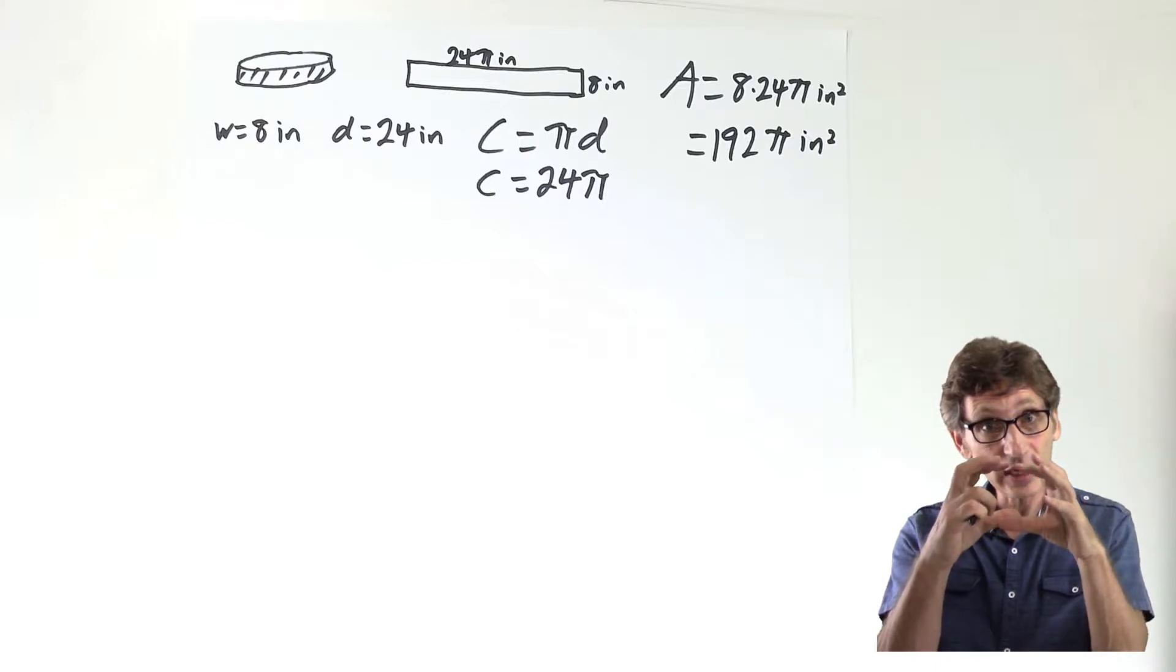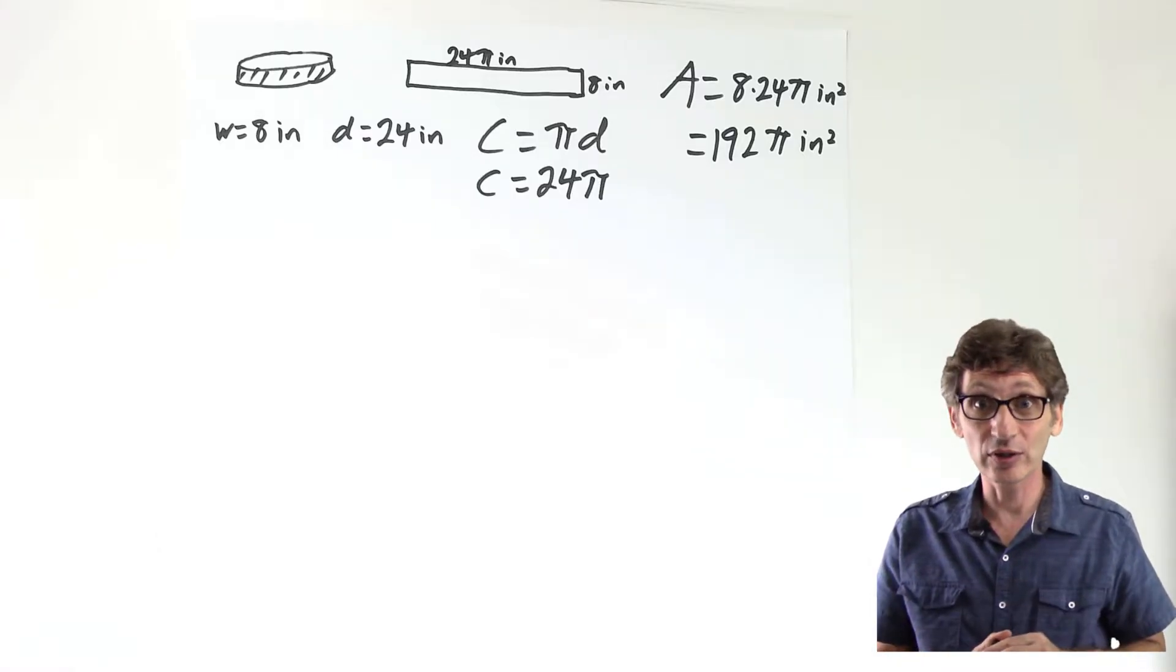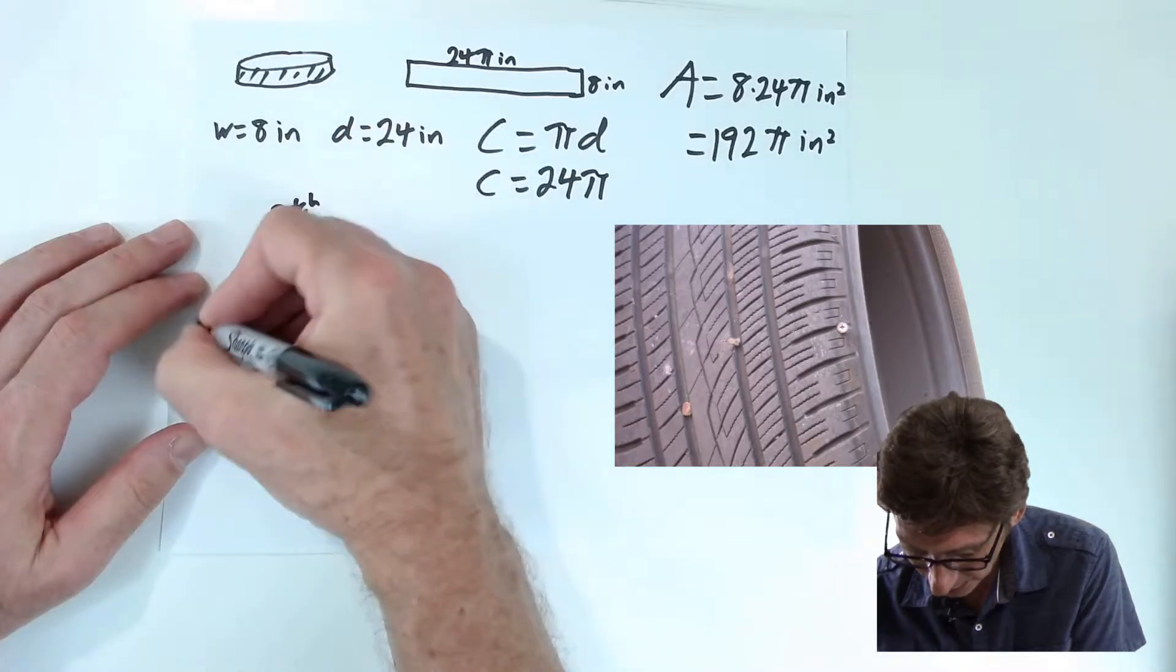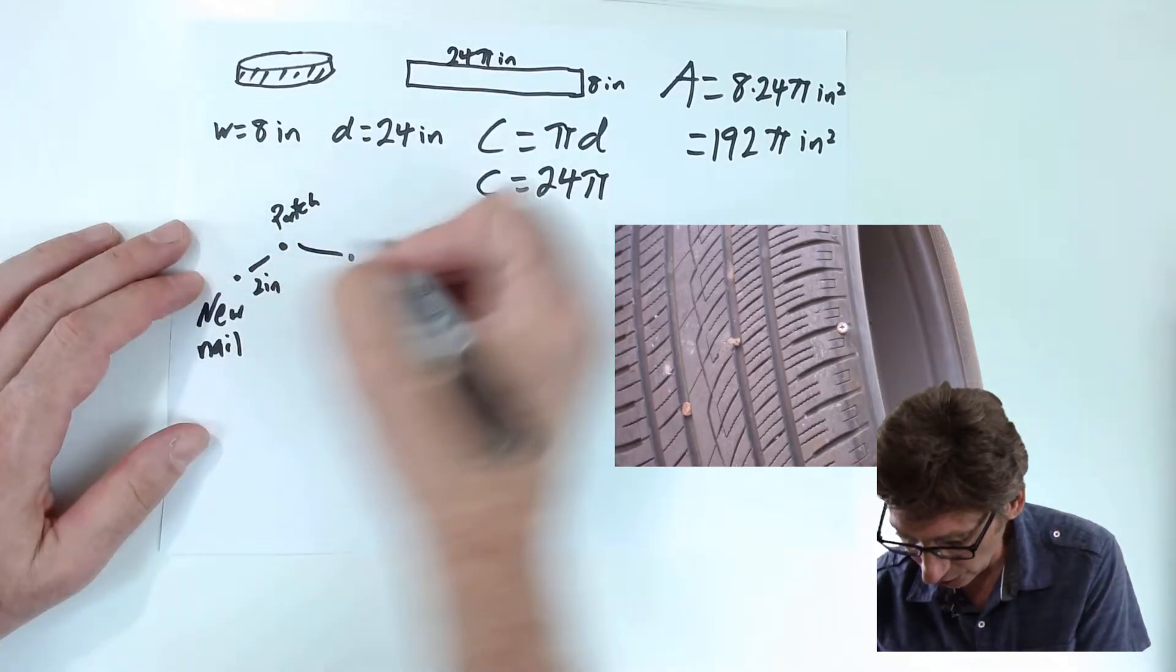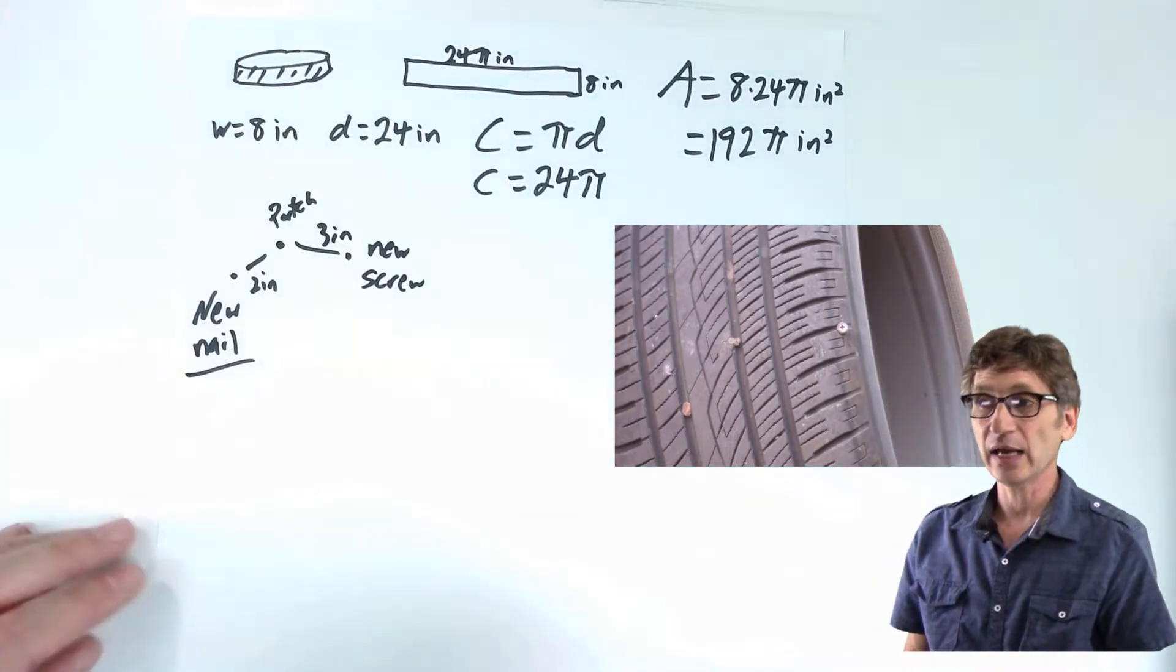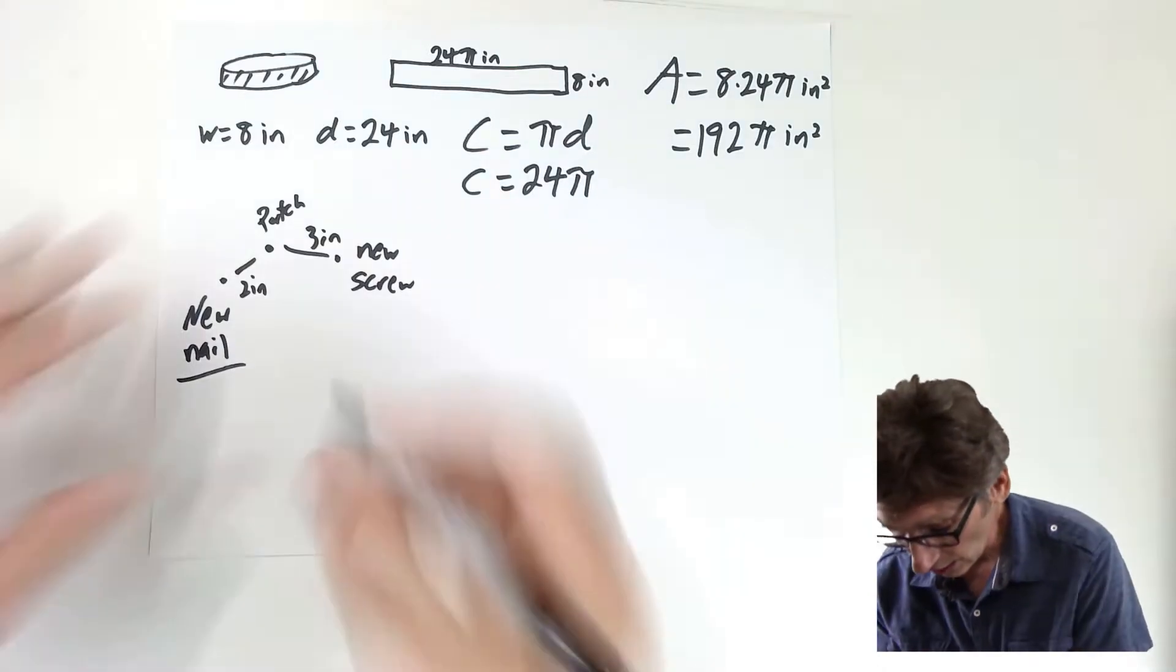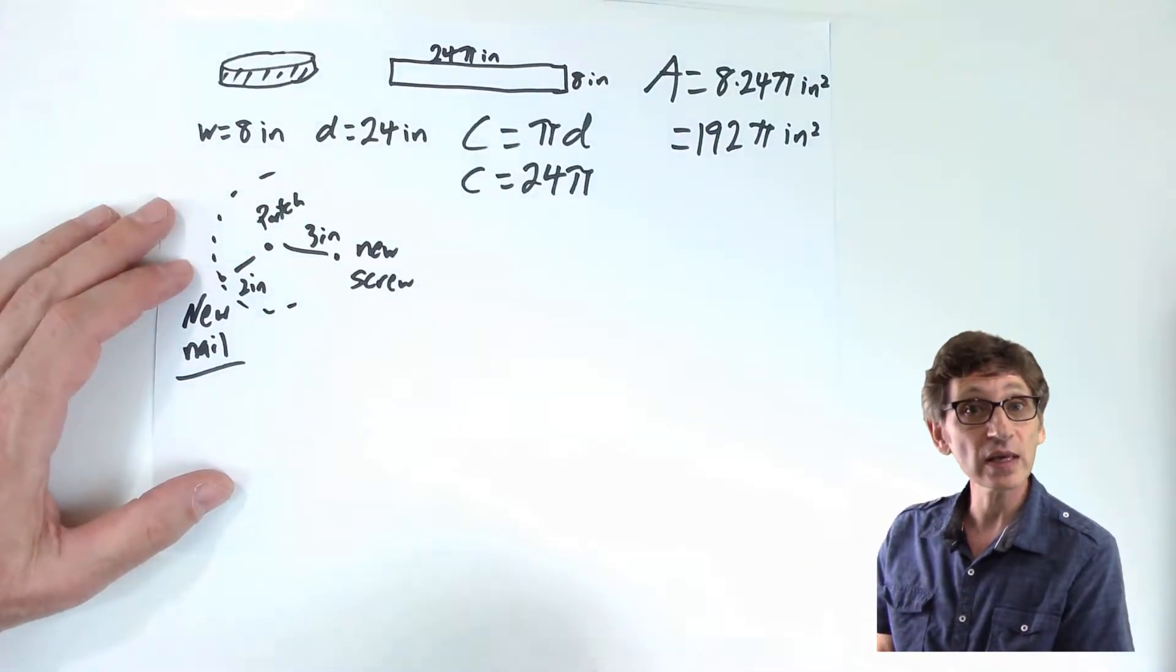Now I want to think about the area of the location where I'm trying to get the new nail, where we want to see what the likelihood of getting a nail in that area is. If we look at what we had on the tire, I had three spots like this. This was the patch. That was the patch. The new nail over here, two inches away. The new screw over here, three inches away. Let's start by looking at the nail. If I want to be within two inches of a previous location, I'm looking at a circle with a radius of two inches. So I have this is my circle with a radius of two inches.